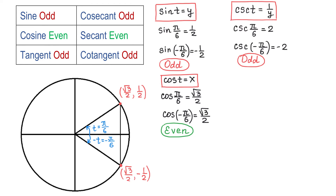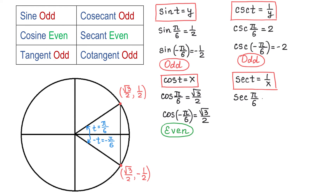Again, we can see from the unit circle that for both these angles, we have the same value of x but opposite values for y. Now, secant, by definition, is 1 over x. Then secant of pi over 6 will be 2 over square root of 3.